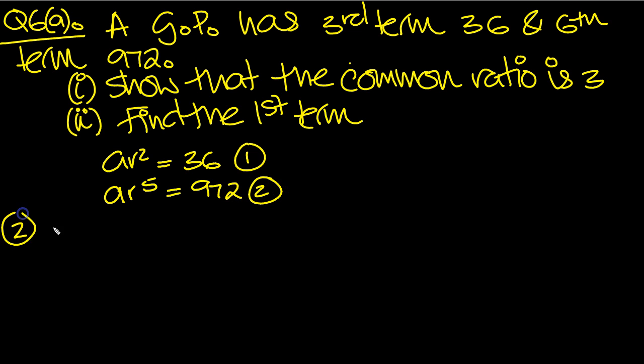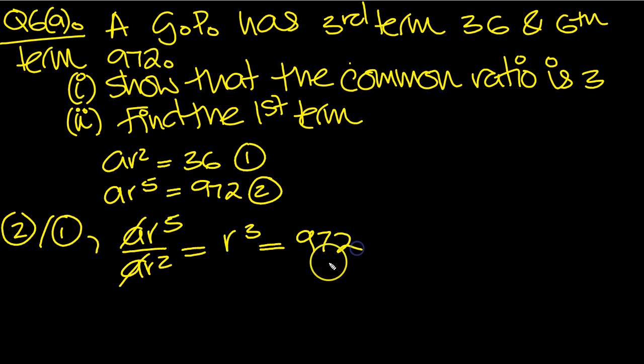So let's divide one by the other. 2 divided by 1 will enable the A's to cancel, and 2 of the R's to cancel. So we've got AR to the 5 over AR squared. As we said, the A's will cancel, 2 of the R's will cancel to leave R cubed. On the other side, we've got 972 over 36. If we tap that in a calculator, we end up with 27. Cubed root both sides now then, R is equal to 3.